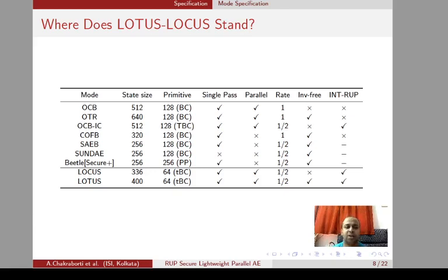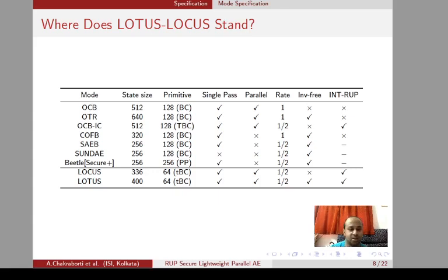In the structural comparison between LOCUS and LOTUS and other well-known designs: LOCUS provides almost the same functionalities as OCB except it provides additional features of INT-RUP security but with a compromise in the rate, which is 1/2 compared to 1. LOTUS provides all the features and adds INT-RUP security over OTR without compromising the rate of 1/2. The other designs are not as feature-rich as both LOTUS and LOCUS.